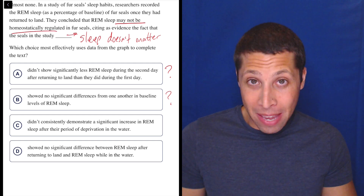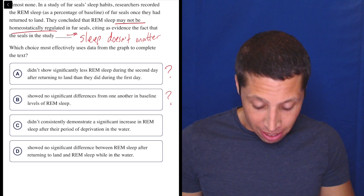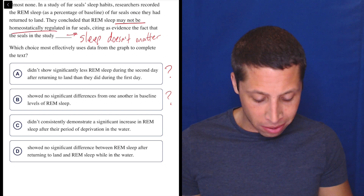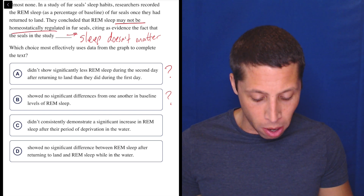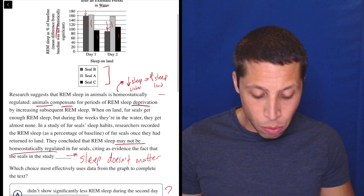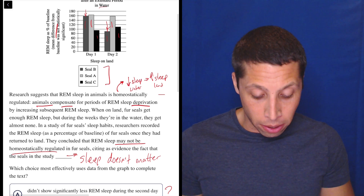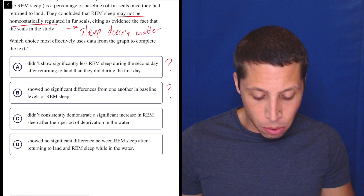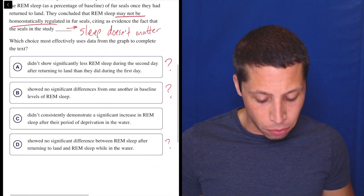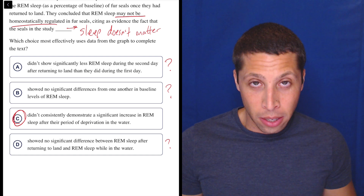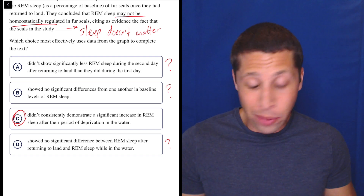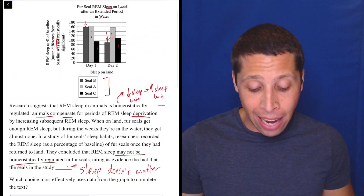Maybe C. Choice D: showed no significant difference between REM sleep after returning to land and REM sleep while in the water. Again, I don't know what they did in the water, so this seems hard to prove. But C seems easy to prove. So for nothing else, go with that.